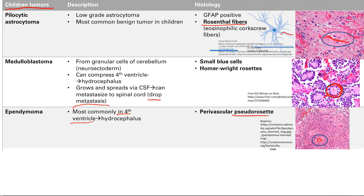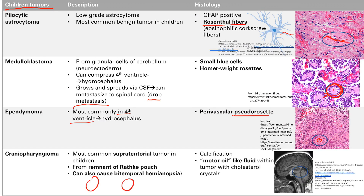Finally, we have craniopharyngioma — the most common supratentorial tumor in children. It arises near the pituitary gland, from a remnant of Rathke's pouch, which is the developmental structure that becomes your anterior pituitary gland. So you're going to have the same symptoms as a pituitary adenoma: bitemporal hemianopsia. The key: if you see bitemporal hemianopsia in an adult, think pituitary adenoma; in a child, think craniopharyngioma. On histology, you'll see calcification and a motor oil-like fluid within the tumor with cholesterol crystals.